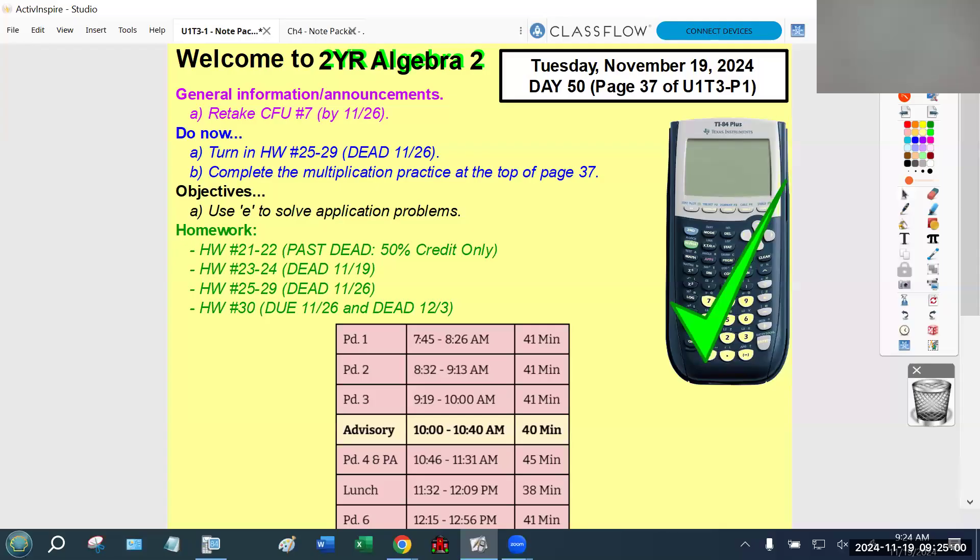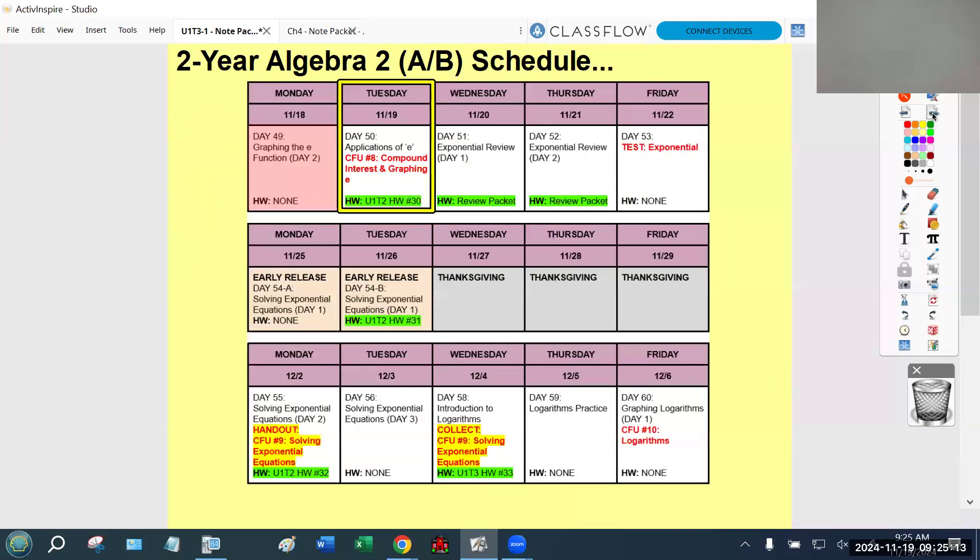I finished my general announcements. The highlights are that CFU 7 was just passed back today, so students have a week to turn that in or retake it if they didn't do well. Homeworks 25 through 29 are due today for the first time, so students have a week to get that in for only 10% off.